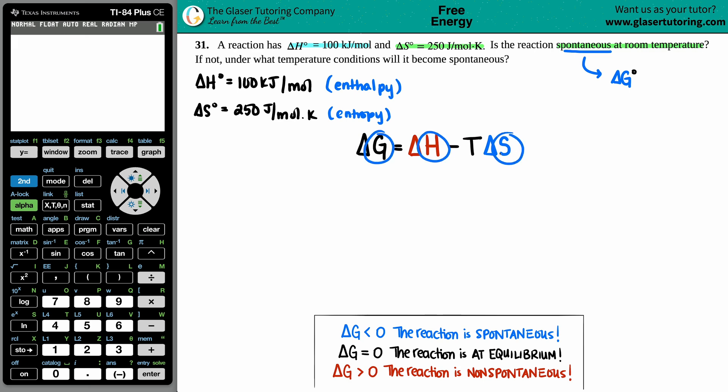This could be for non-standard values. However, since we're dealing with standard values, we can add those notches on G, H and S because these are state functions. Keep in mind your T value, temperature, is not a state function. Since we're talking about standard values, we should use the standard temperature, and a standard temperature when using G, H's and S's is 298.15 Kelvin.